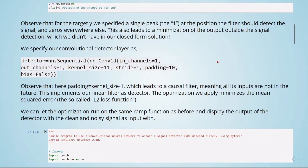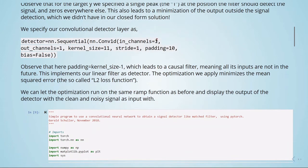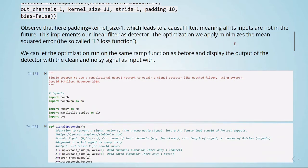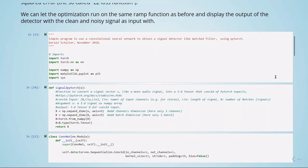So we will specify our convolutional detector layer using a PyTorch Conv1D, input channels, output channels, the kernel size, stride, padding, setting bias to false. Observe that the padding equal to kernel size minus one leads to a causal filter, meaning that all its inputs are not in the future. So this implements our linear filter as detector. And the optimization we apply will minimize the mean squared error, which is also called L2 loss function. So we can let the optimization run on the same ramp function as before and display the output of the detector when we use as an input the clean signal and a noisy signal.